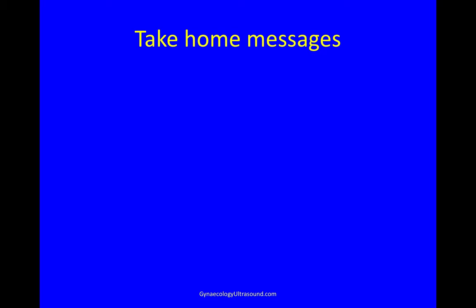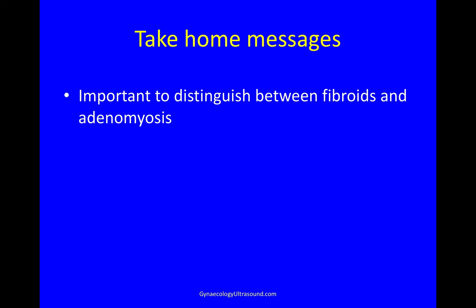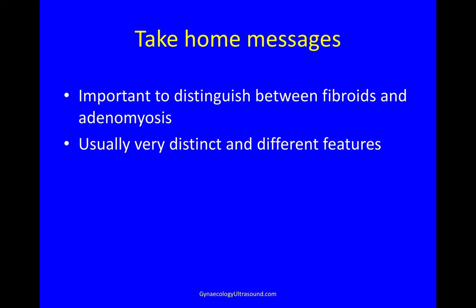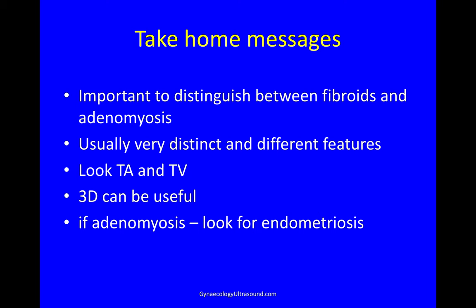Take-home messages: it's important to distinguish between fibroids and adenomyosis. They're usually very distinct and have different features, though it can be difficult. You need to look transabdominally and transvaginally, and 3D can be useful. If it's adenomyosis, you need to look for endometriosis. Follow up any mass that you are uncertain of.